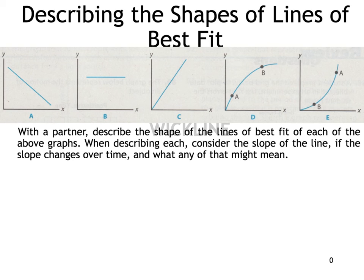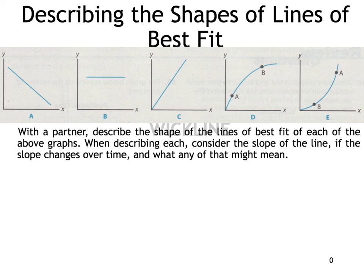Now let's describe the shapes of lines of best fit. Take a moment for graphs A, B, C, D, and E and think about what makes these shapes different. Think with your eyes — they're obviously all different, but describing them in words can be tricky. Think about what words you would use to distinguish graph A from B, C, D, and E. You can pause the video while you think about that.